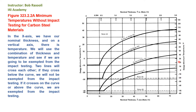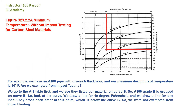Two lines will cross each other. If they cross below the curve, we will not be exempted from impact testing. If it crosses on the curve or above the curve, we are exempted. For example, we have an A106 pipe with 1-inch thickness and our minimum design metal temperature is 10°F. Are we exempted from impact testing? We go to the A1 table first and see that A106 Grade B is listed on Curve B. We draw a line for 10°F and a line for 1 inch. They cross at a point which is below Curve B, so we are not exempted from impact testing.